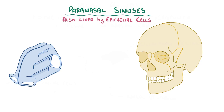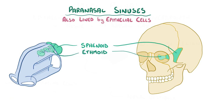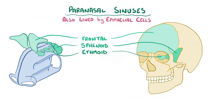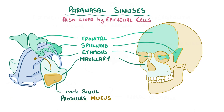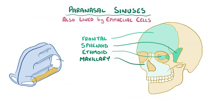The paranasal sinuses are named for the bones that house the sinus: the sphenoid, located next to the eyes; the ethmoid, between the eyes; the frontal, above the eyes behind the forehead; and the maxillary, behind the cheeks and below the eyes. Each of the sinuses normally produces mucus, which drains into the respiratory region. Holes at the back of the respiratory region, called choanae, act like funnels to direct the mucus into the throat to be swallowed.